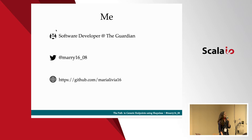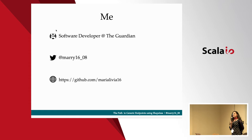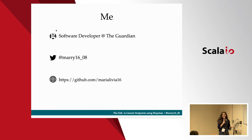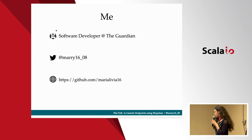My name is Maria. I joined the Guardian two years ago as a graduate software developer. Ever since I've changed teams three times. I was first part of the content API team where I was first introduced to Scala and functional programming. Six months later I left and joined the apps team where I developed for our iOS app using Swift and Objective-C, but then decided to go back to my first love, Scala. I'm now part of the editorial tools team where we develop the tools our journalists are using every day.